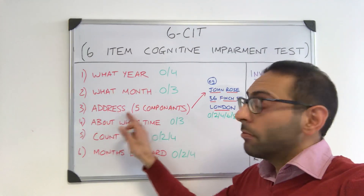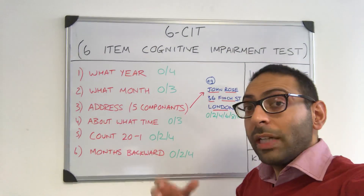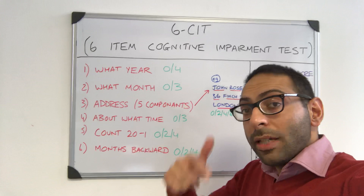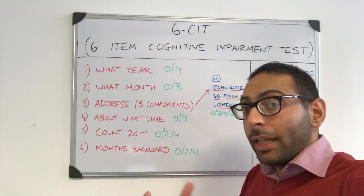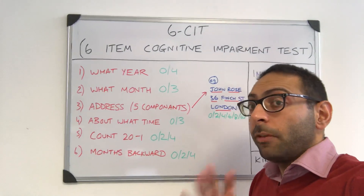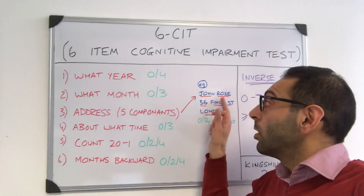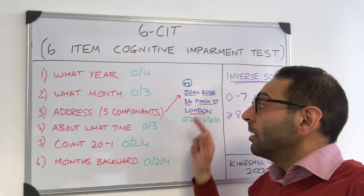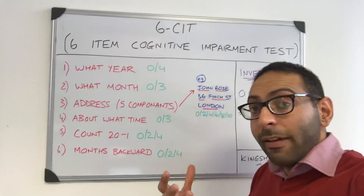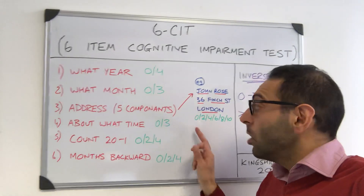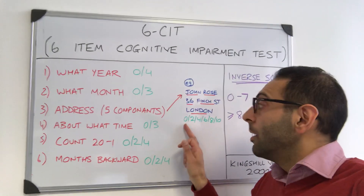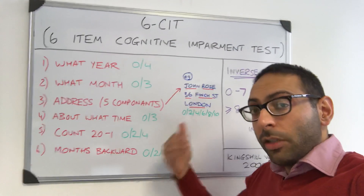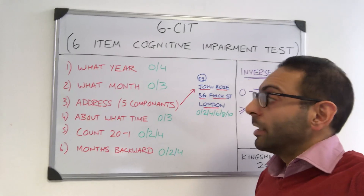Number three is address recollection. You give them an address with five components and ask them at the end whether they can recall that address. An example of the five components are: John, Rose, 36 Finch Street, London. Marks are given according to how many errors you make — no errors scores zero, five errors scores ten, with gradations in between.